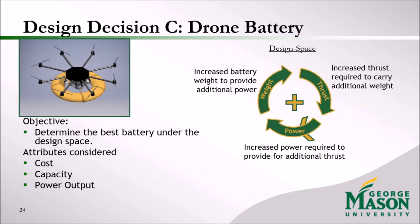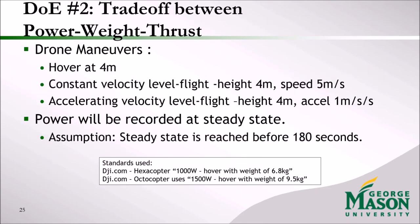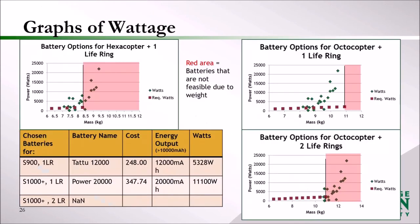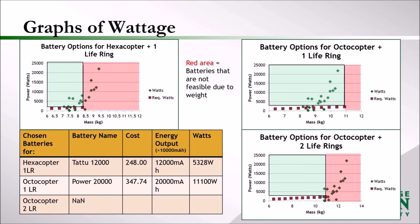The objective for our third design decision is to determine the best battery for the drone, considering the attributes of cost, capacity, and power output. Our drone performs three maneuvers and power is recorded at steady state. In each of the three graphs, the green area indicates potentially feasible batteries. Two example feasible batteries are listed in the table below. However, the dual life ring octocopter does not have any feasible batteries — it simply has too much weight.